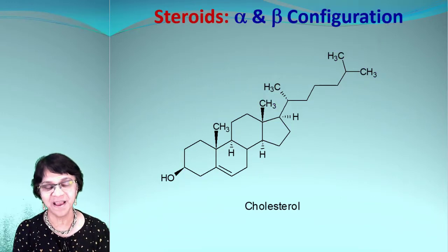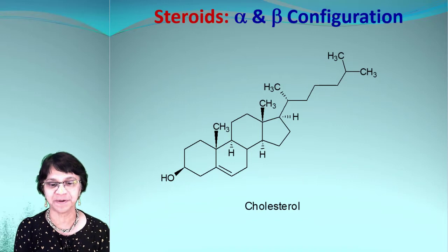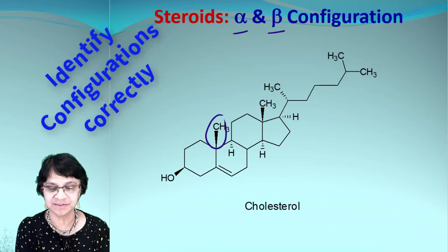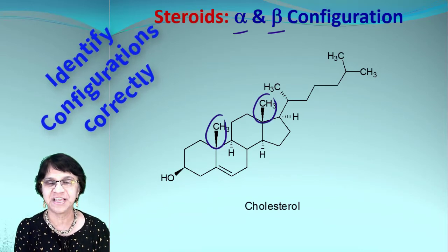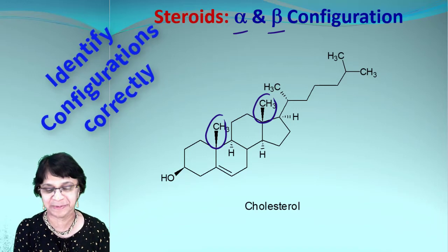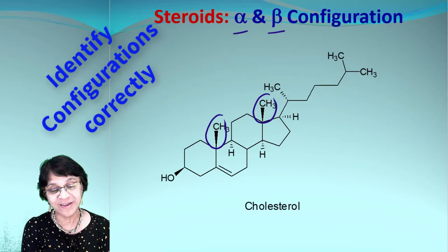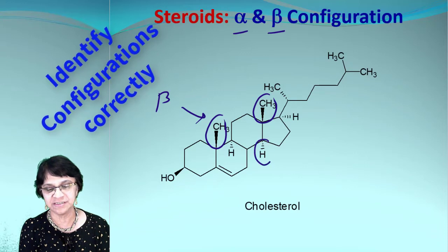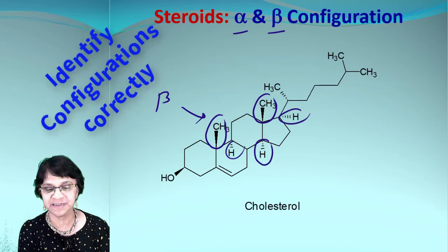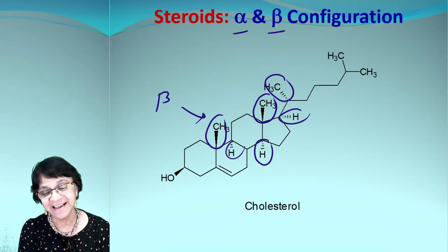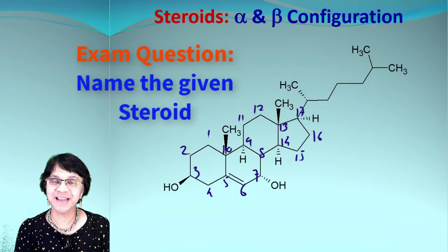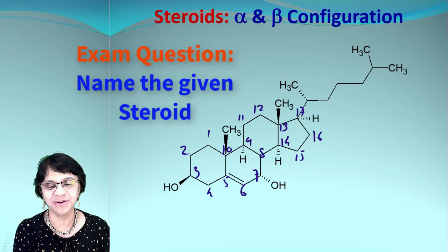Now you got the numbering system. Let's go one more step deeper. Let's talk about alpha and beta configuration. It's simple, guys. One simple hint: if your structure shows any groups appearing as if they're protruding out of the plane—either plane of the paper or plane of the computer monitor—then you can always mention those as beta configuration. And if you see anything which is appearing as if it's going deeper inside the plane of paper or plane of the computer monitor, that is going to be referred as alpha. So now you know how to number any steroid and you also know how to find alpha and beta configuration.